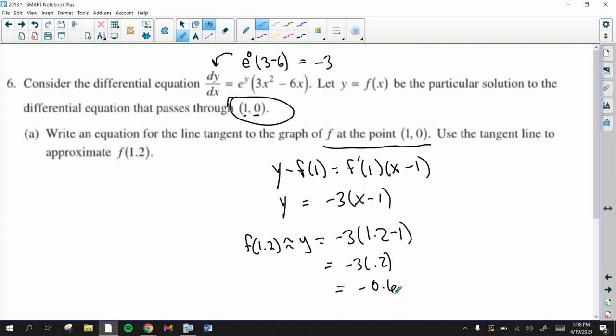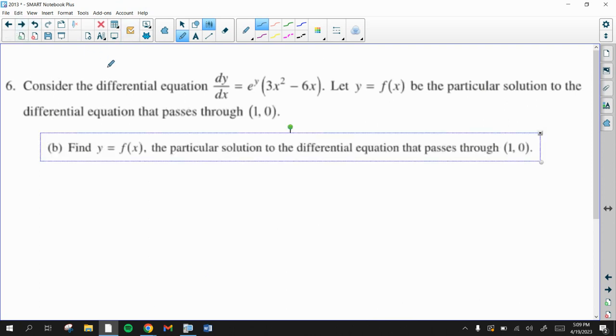So there could be a follow-up question on this, on whether the tangent line over or under approximates the actual value. And if it does ask, you want to find out if the graph is concave up or concave down in that interval. And that would be with the second derivative. But it doesn't ask, so we won't worry about that. So the next question, B, is solving the differential equation.